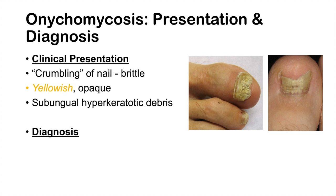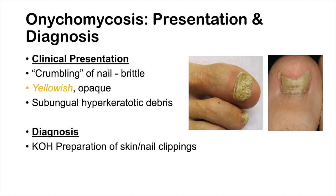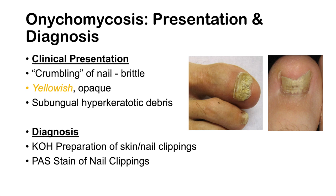The diagnosis is quite simple. We take skin or nail clippings of the nail or surrounding site and perform a KOH prep. We could also do a PAS stain of the nail clippings. Both can confirm the diagnosis of onychomycosis, but often the presentation of the nail itself will lead to a clinical diagnosis.